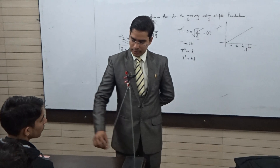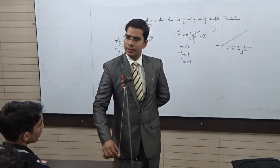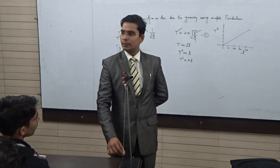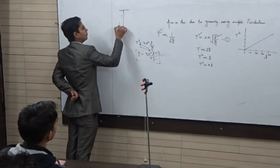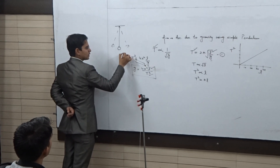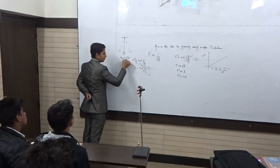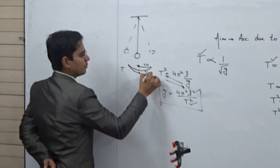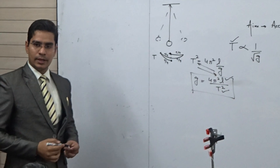One complete time period starts from the mean position: first to the left extreme, then back to mean, then to the right extreme, then back to mean again. Each of these four legs is T/4, so four times T/4 makes one full time period T. This complete journey is your one time period.